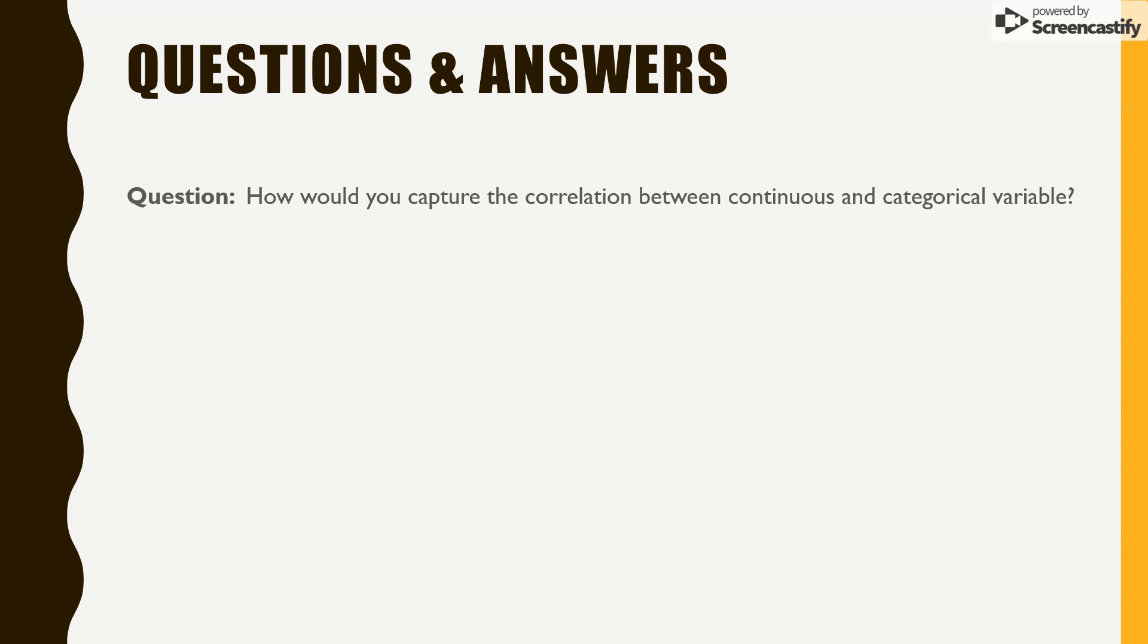Now, how would you capture the correlation between continuous and categorical variable? This is a very simple question. So the best answer I can think of is use ANCOVA. I repeat, use ANCOVA, which is Analysis of Covariance Technique.